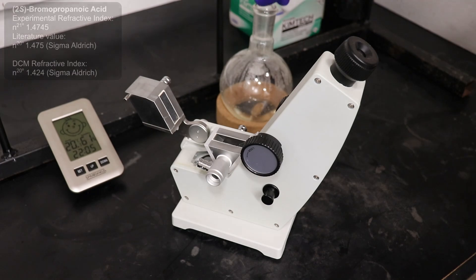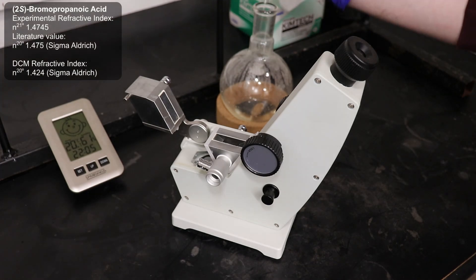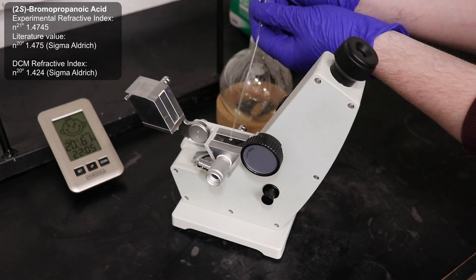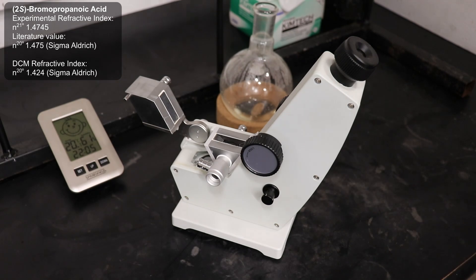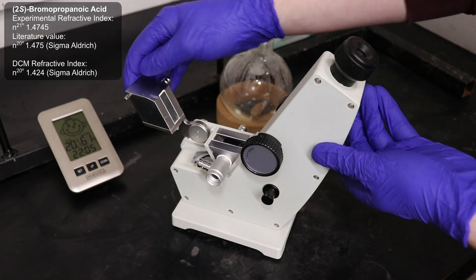I measured its refractive index, finding it to be 1.4745 at 21 degrees Celsius. This closely aligns with the literature refractive index value of 1.475 at 20 degrees Celsius, thus showing that I have actually made 2-bromopropanoic acid.